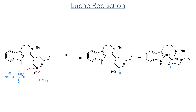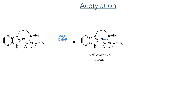In the next step, the researchers carried out a Luche reduction. Cerium trichloride first coordinates to the ketone, increasing the electrophilicity and allowing sodium borohydride to attack at the carbonyl centre. It is this coordination that provides the selectivity for reduction at the carbonyl centre in preference to reduction of the alkene. This reduction was not stereospecific; however, this was unimportant as the hydroxyl group would be eliminated at a later step. In order to facilitate this elimination, it was first acetylated using acetic anhydride and DMAP, with 96% yield over two steps.